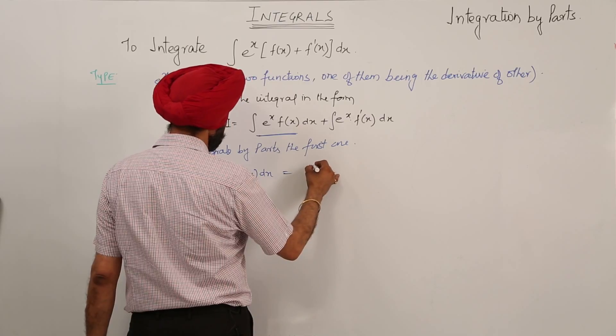The result is f(x)eˣ minus integration of f'(x) eˣ dx, plus the second part which is integration of eˣ f'(x) dx. These two terms — the minus integration of f'(x) eˣ dx and the plus integration of eˣ f'(x) dx — cancel each other out.